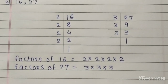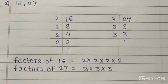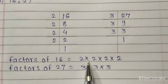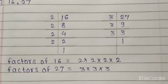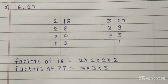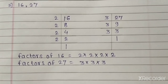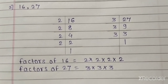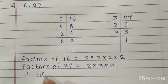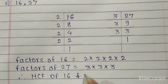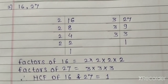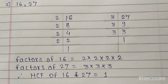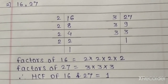Now see which is the common factor between these two numbers. Nothing is common — 2 is present in 16 but not in 27, and 3 is present in 27 but not in 16. Therefore the HCF of these two numbers is 1. If no prime number is a common divisor of all the given numbers, then 1 is the HCF because it is the only common divisor. HCF of 16 and 27 is equal to 1. Thank you.